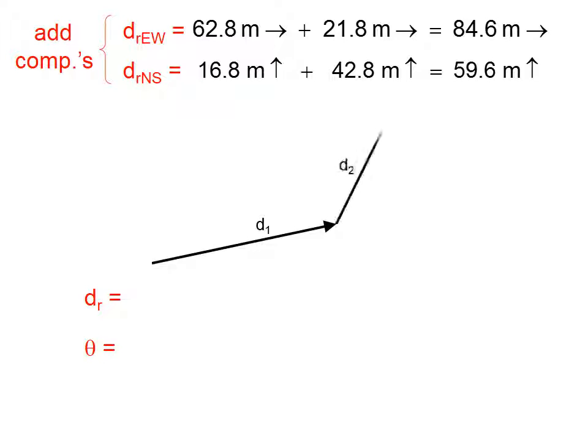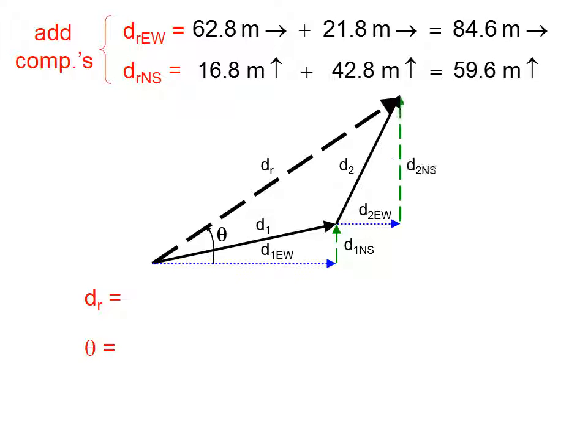Now, let's see how this works. If we were to add these graphically, we would draw them out to scale, tip to tail, and there would be the resultant. There would be our angle. We've done that in an earlier lesson. What we're doing here is finding the x component, or the east-west component, of that vector and its y component. For vector d2, we're finding its east-west component and its north-south component. Now, watch what's going to happen here.